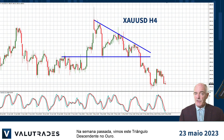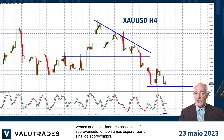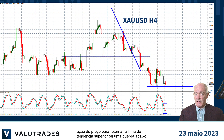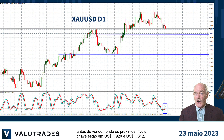Last week we spotted this descending triangle on gold. Price action broke through support and fell to this key level at $1,958. We see that the stochastic oscillator is oversold, so we'll wait for an overbought signal, price action to return to the upper trend line, or a break below before selling, where the next key levels below are $1,920 and $1,812.